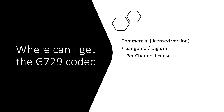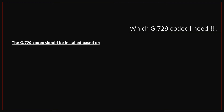Where can you get the G729 codec? For a commercial G729, you can purchase from Sangoma, which is per-channel licensed. For a free version of the G729 codec, download from asterisk.hosting.lv. The G729 codec you need to download and install should be based on your Asterisk version, operating system type, and CPU make.